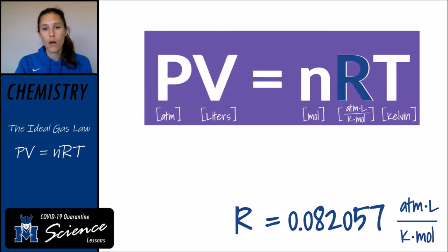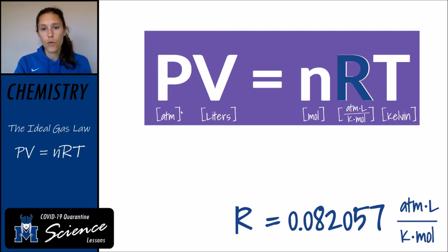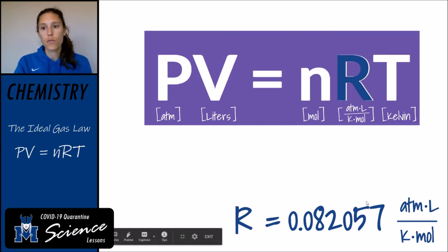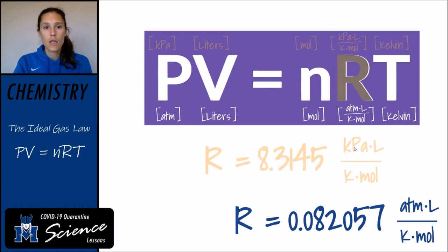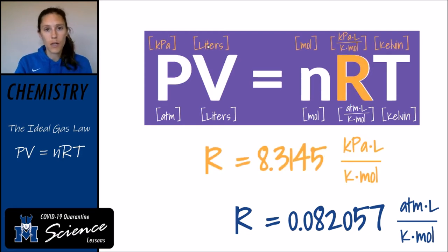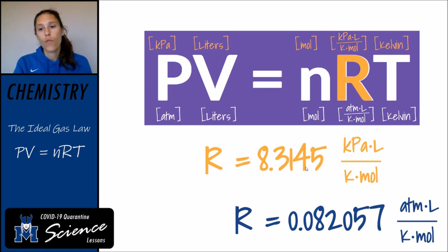When you're plugging in pressure in atmospheres and volume in liters, you must have moles and Kelvin regardless of what your pressure and volume units are, and you use an R value of 0.082057. But if instead you use a pressure in kilopascals and a volume in liters, then you use the R value 8.3145, with units of kilopascal·liters per Kelvin·mole.